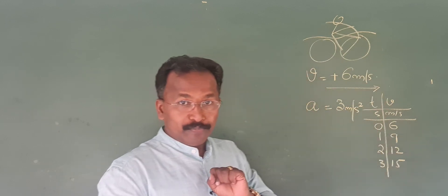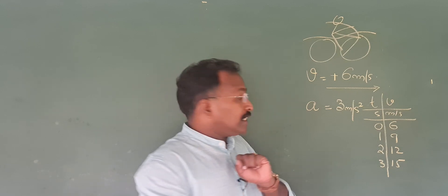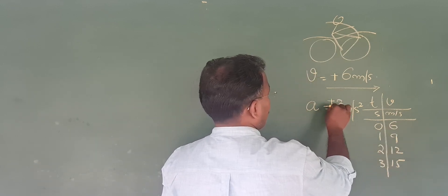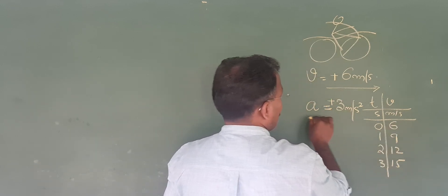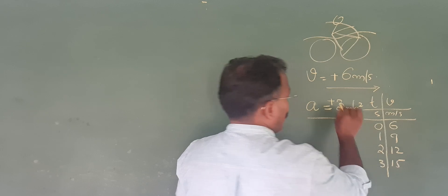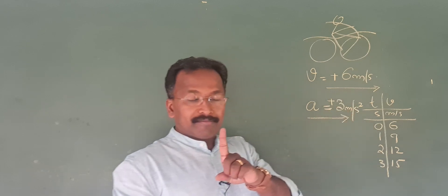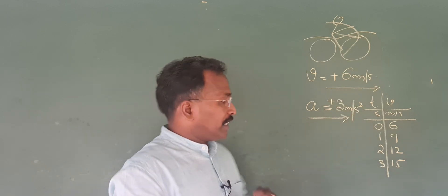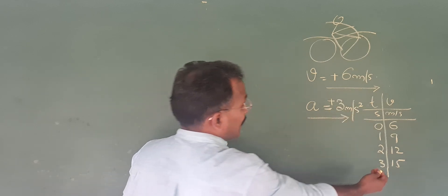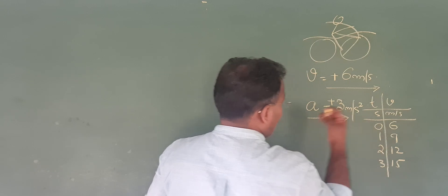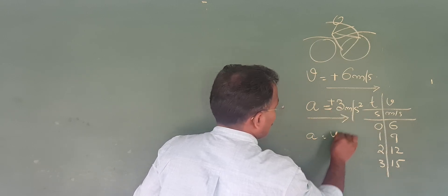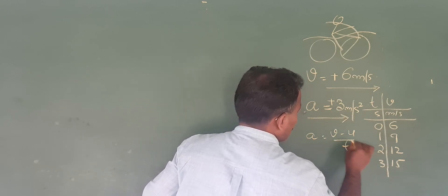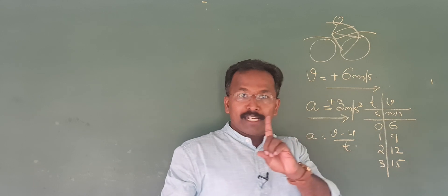This is positive acceleration. If you want to calculate acceleration, you will have the formula: acceleration is equal to v minus u divided by t. Let's try this formula.